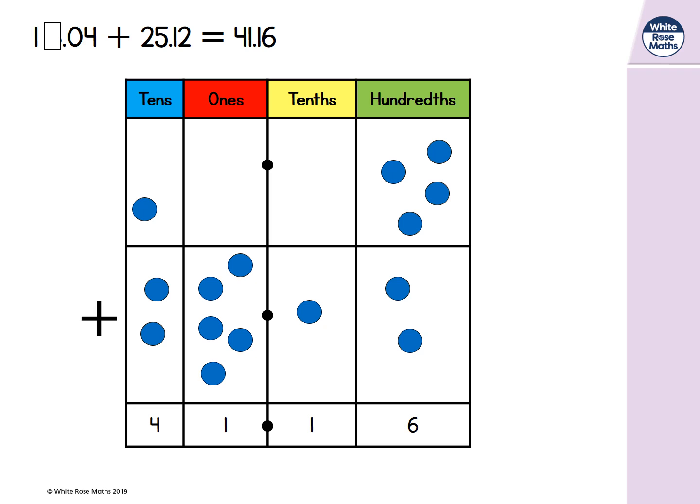What helps is looking in the tens place. Both tens digits are given: 1 and 2. Yet the total number of tens is 4. So the ones needs to be more than 10 ones so that we can exchange for 1 ten.